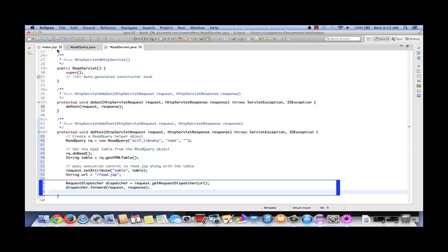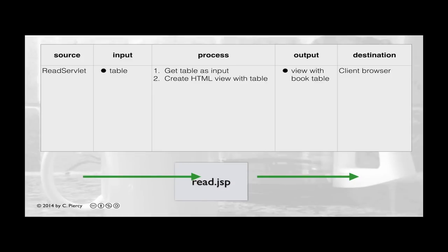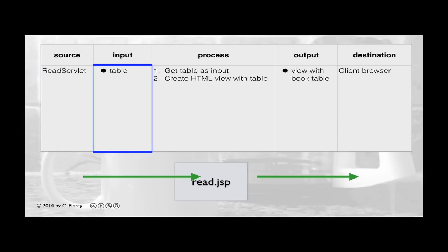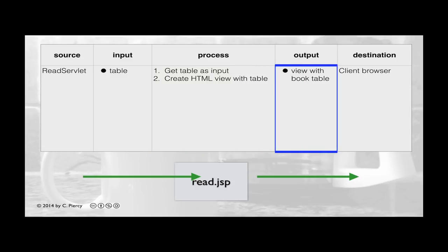So at this point our read servlet is complete. Here's our IPO table for read.jsp. We come into read.jsp when the read servlet passes control to read.jsp. When it does this it will also send along an HTML table. Read.jsp will get this table as input, then use it to create an HTML view that includes the table to send back to the client browser.